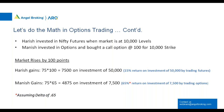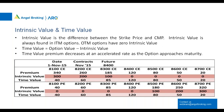If Nifty rises by 100 points — from 10,000 to 10,100 — Harish gains ₹7,500 on a ₹50,000 futures investment, giving a 15% return on investment. Whereas Manish, who bought the 10,000 strike call option for a premium of 100 (₹7,500 total), makes ₹4,875 — a 65% return on investment of ₹7,500.